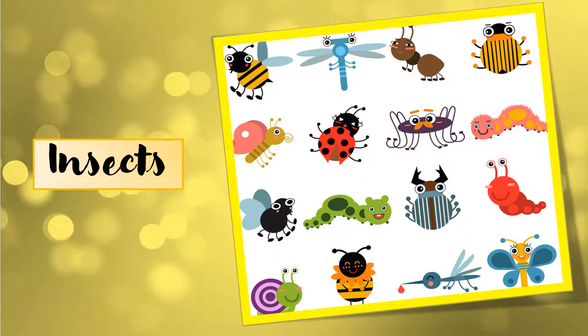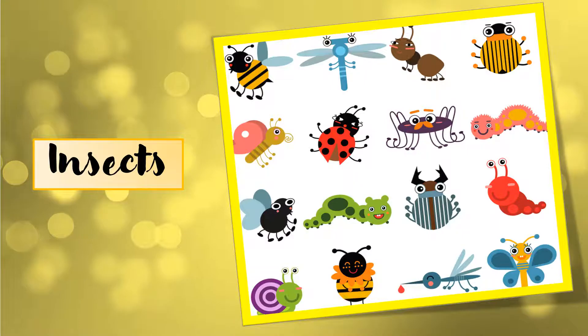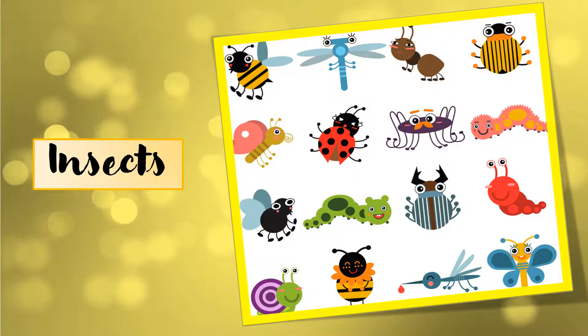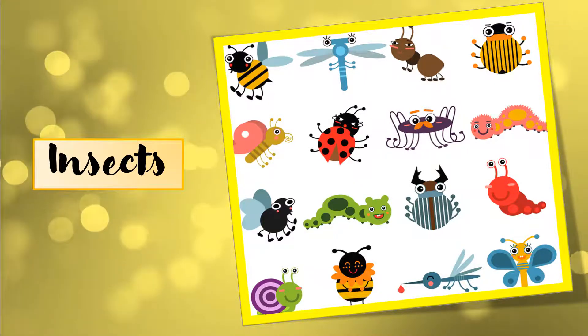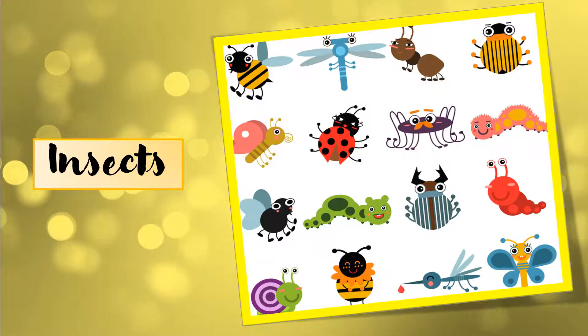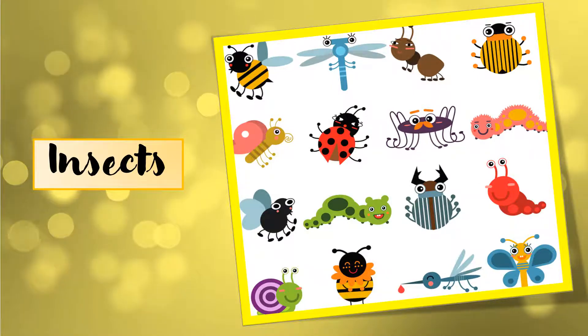What are insects? Insects are very small animals that have six legs. Now some insects have wings also and they can fly.